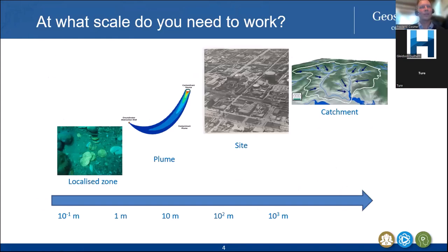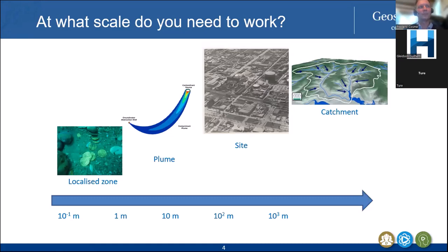One of the important questions in hydrogeology is: at what scale do you need to work? Do you want to assess a localised zone because you've got some DNAPL or NAPL somewhere? You may want to work at the scale of a plume, or go bigger at site scale, or work with a catchment. When you voluntarily introduce a tracer, groundwater travels relatively slowly, so you often limit it to local zone, plume, or site scale — though I've used applied tracers at catchment scale in permeable karstic aquifers.